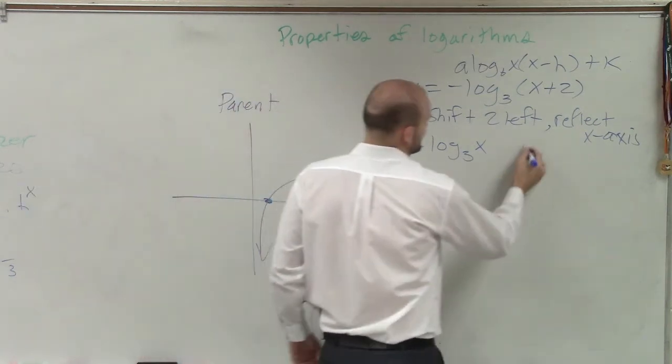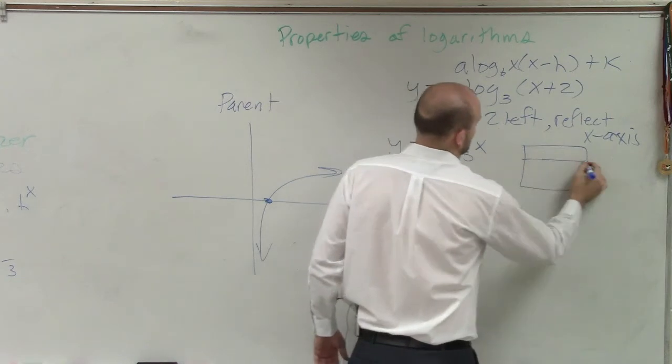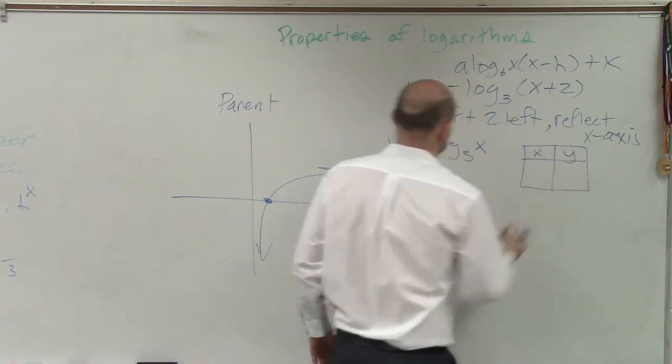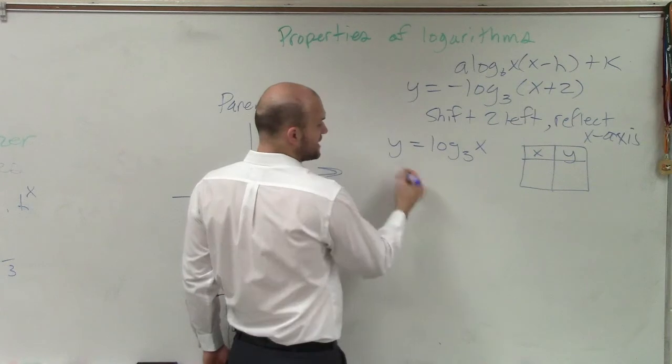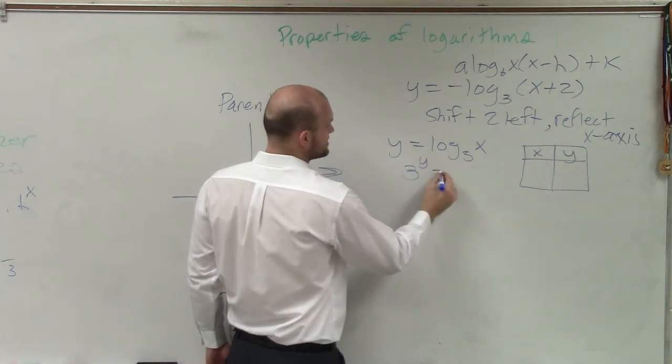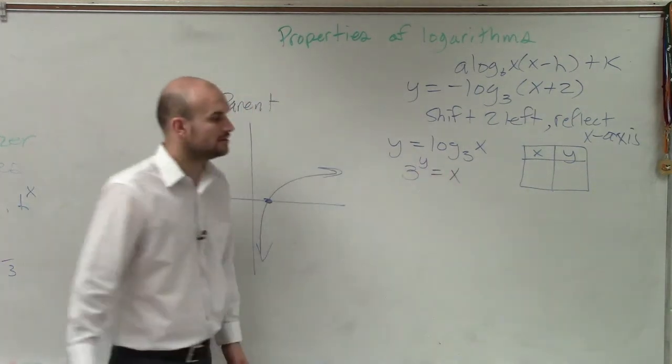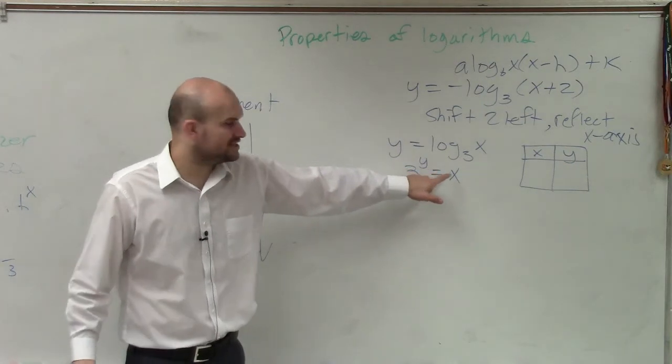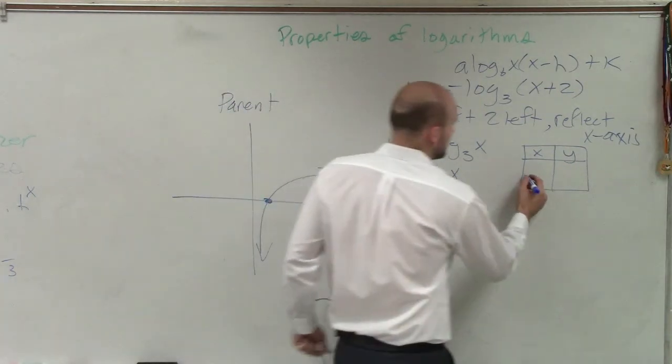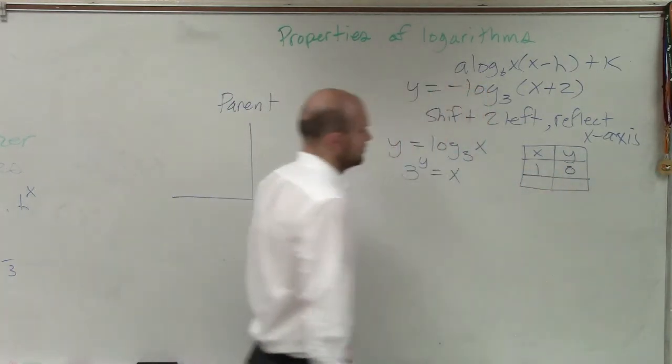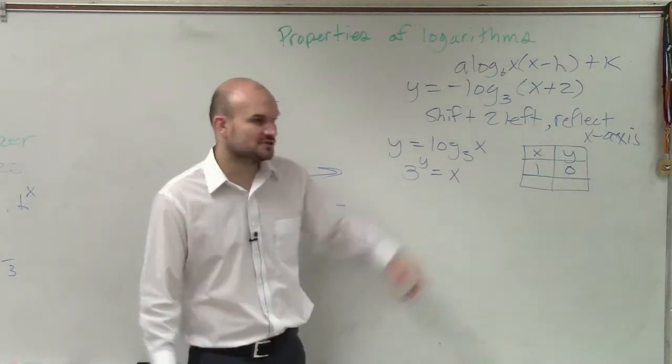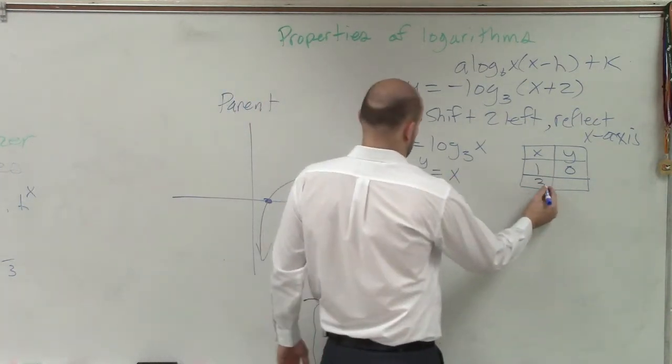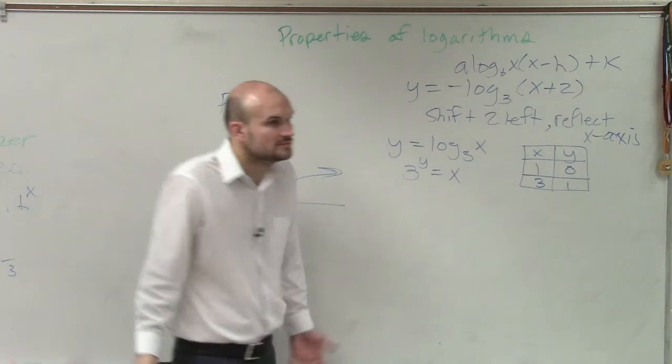So if I do an xy table for this, if I plug in, what do we want to do? So we'll rewrite the exponential because it makes a little bit more sense. I could put 0. If I did 0, I would get 1 for y. Right? And then I could also do 3. And I could say 1.